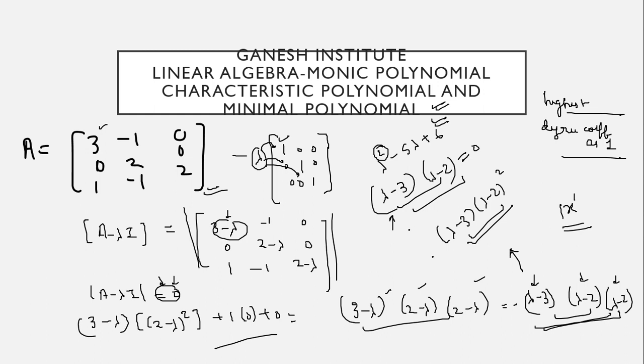So minimal polynomial is lambda minus 3 lambda minus 2.